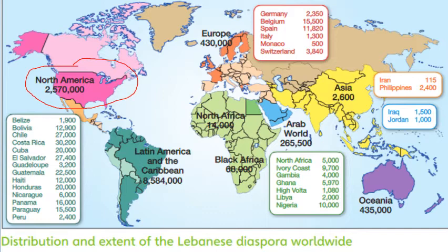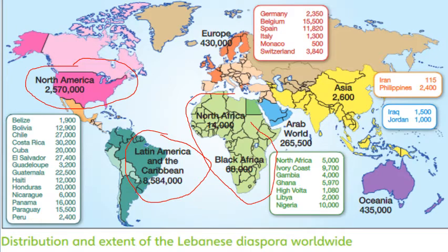Lebanese people migrated to North America due to natural disasters or for a better life. In South America, particularly Brazil, around 7 to 8 million Lebanese people are in Brazil alone. These are the two major destinations. There are Lebanese populations in Africa, Australia, Asia, and Europe as well. The majority of Lebanese people live outside their country — they are called diaspora, meaning separate or scattered. Lebanon is known as the country with the highest proportion of its population living as diaspora compared to its total population.